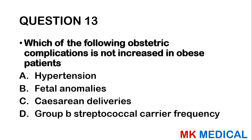Question 16: All of the following conditions have increased risk in smokers EXCEPT which one? A — preeclampsia. B — preterm birth. C — placental abruption. D — sudden infant death syndrome. Sudden infant death syndrome, placental abruption, and preterm birth are all increased in smokers. However, preeclampsia is not necessarily increased by smoking. The answer is A.